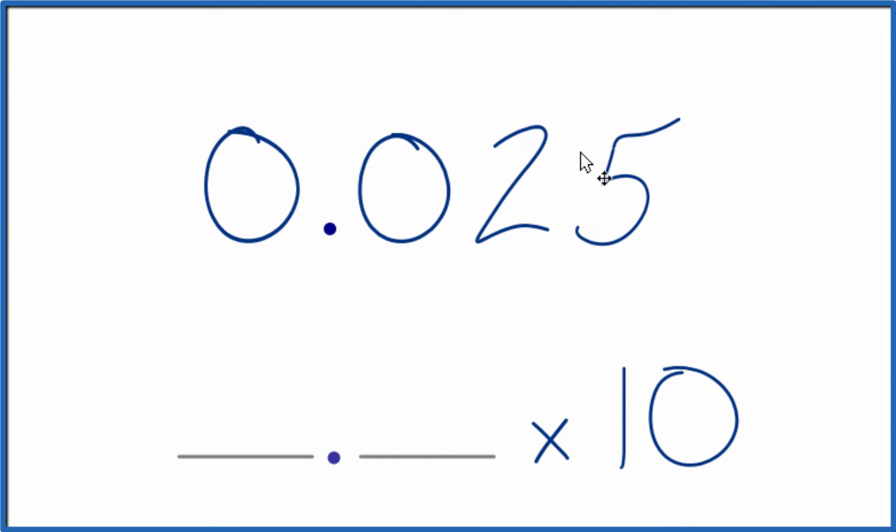So when we look at this 0.025, that's less than 1. That means our exponent's going to be negative. And we want to figure out what the whole number and the decimal are.